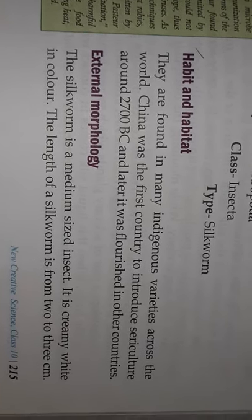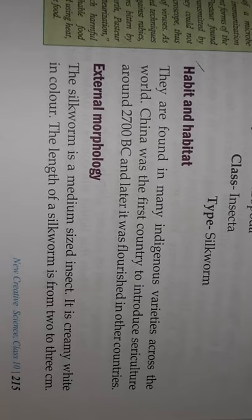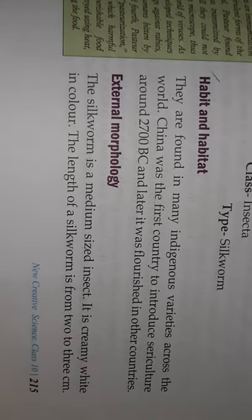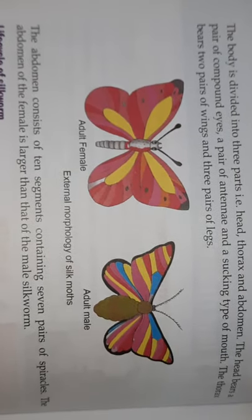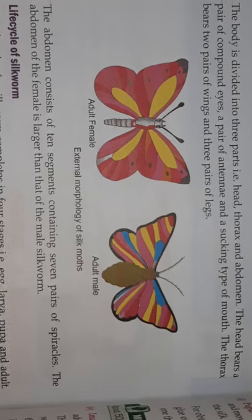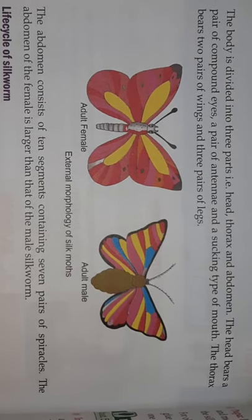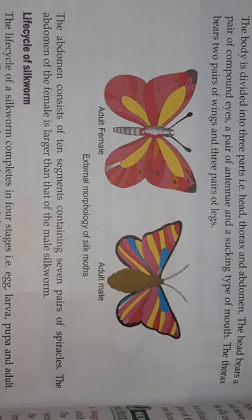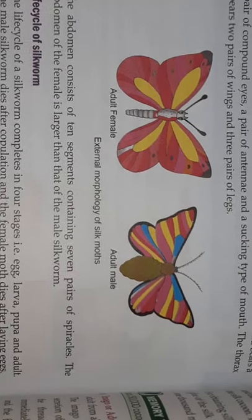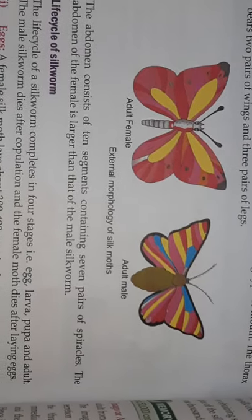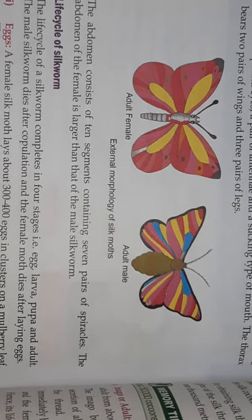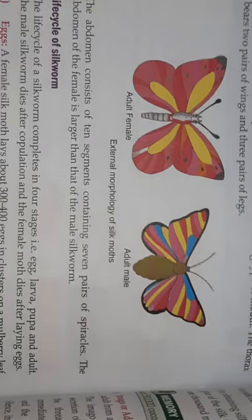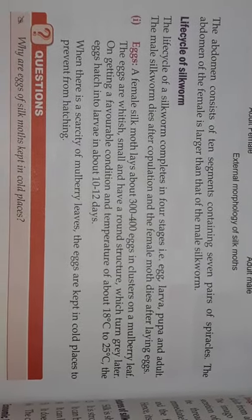Regarding external morphology: silkworm is a medium-sized insect, creamy white in color, with a length of two to three centimeters. The body is divided into three parts: head, thorax, and abdomen. The head bears a pair of compound eyes, a pair of antennae, and a sucking type of mouth. The thorax bears two pairs of wings and three pairs of legs. The abdomen has seven pairs of spiracles. The abdomen of the female is larger than that of the male silkworm, as the female carries more eggs.